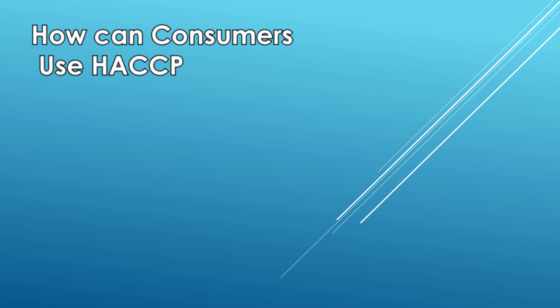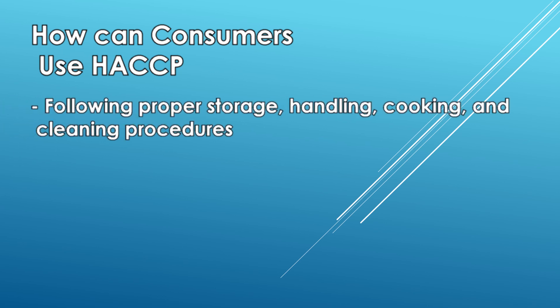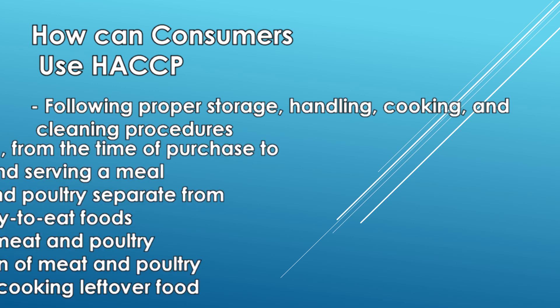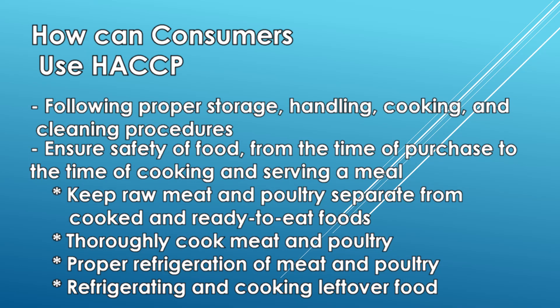Consumers can implement HACCP-like practices in the home by following these simple yet effective steps as part of their food safety plan. Firstly, follow proper storage, handling, cooking, and cleaning procedures. From the time of purchasing at the grocery store to the time they cook and serve a meal: keep raw meat and poultry separate from cooked and ready-to-eat foods, thoroughly cook the meat and poultry, properly refrigerate meat and poultry, and refrigerate and re-cook leftover foods to prevent bacterial growth.